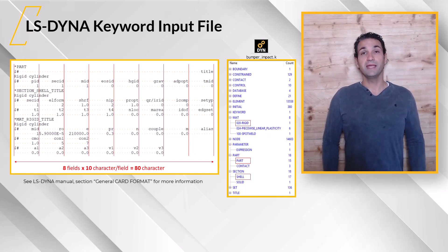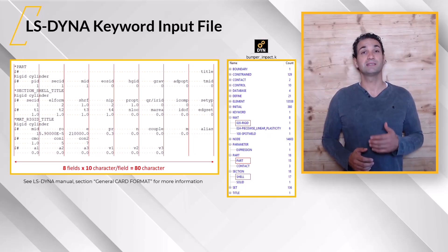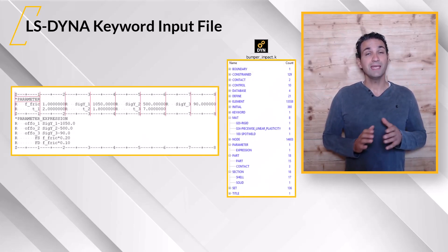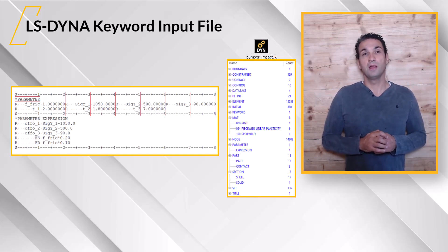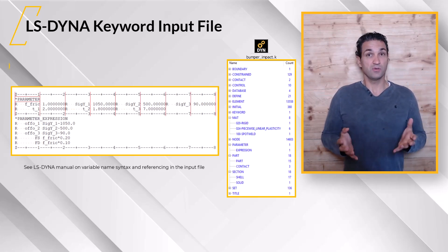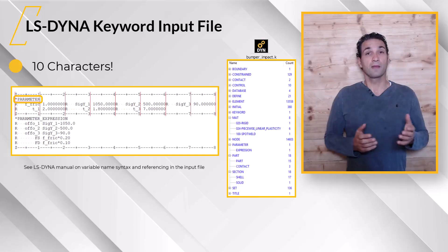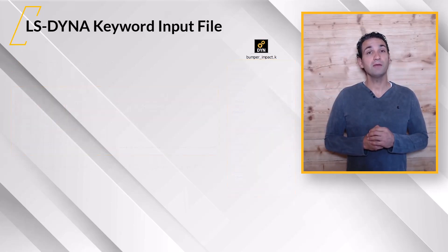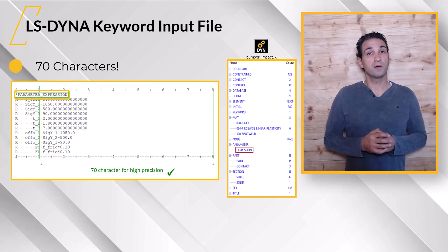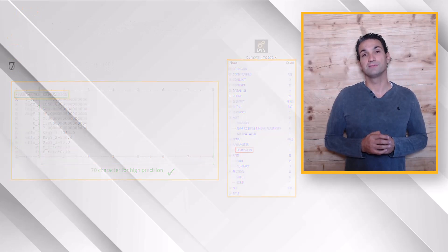In principle, each numeric value in that file could be defined as an input parameter for OptiSlang. However, LS-Dyna offers the keywords *PARAMETER and *PARAMETER_EXPRESSION, which are supported by OptiSlang's input integration. Please study the LS-Dyna manual on the syntax for variable names and how to reference the variable names anywhere in the input file. Since you can use only 10 characters for the keyword *PARAMETER, we recommend using the keyword *PARAMETER_EXPRESSION, where you can define values up to 70 characters. And thus there will be no problem with the accuracy of the automated OptiSlang entries.